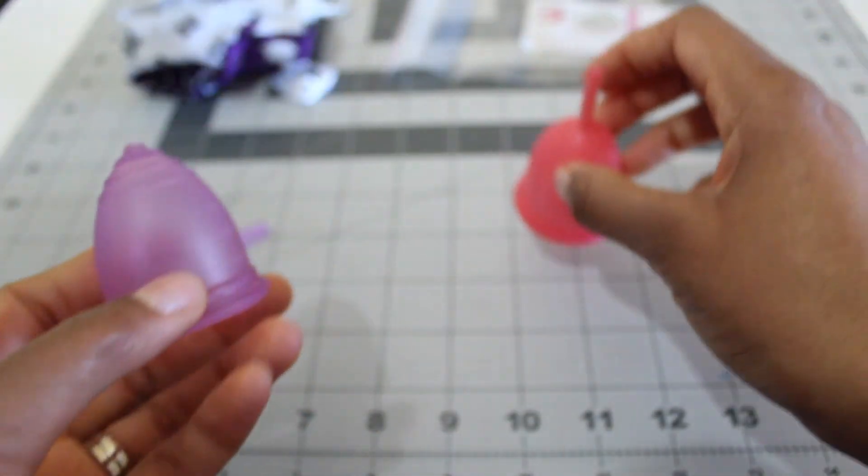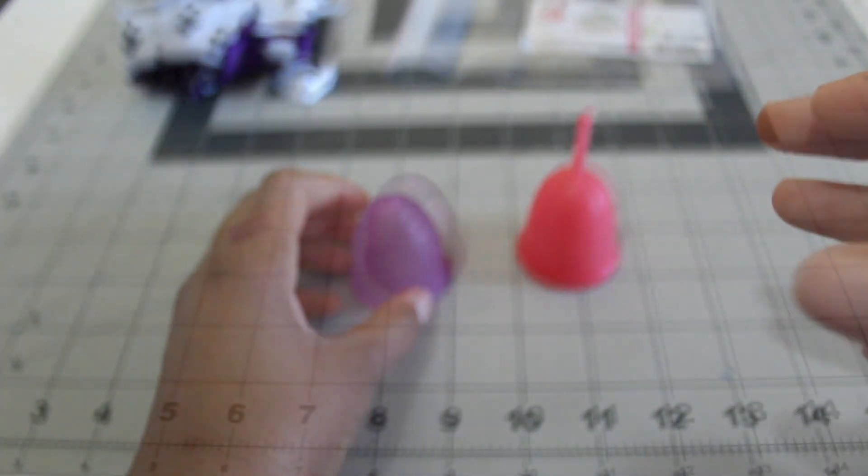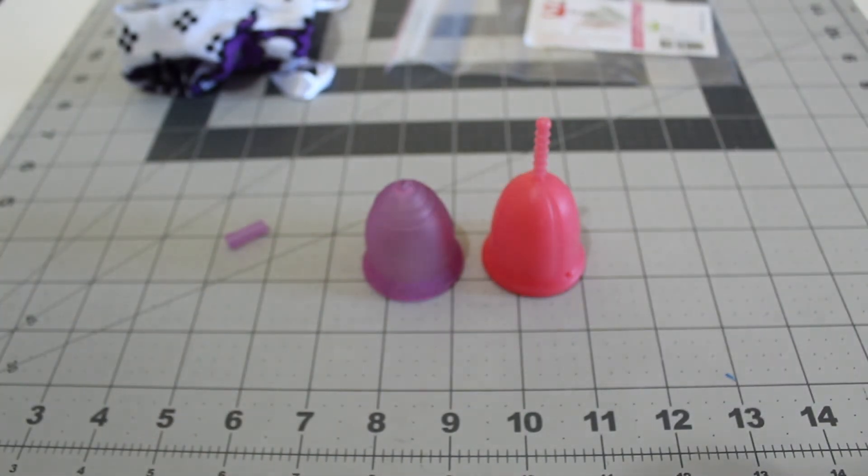Alright so that is the Isabel small compared to the Ruby small. I look forward to trying Isabel. It should be a nice soft cup to use. Alright, thanks for watching. Bye.